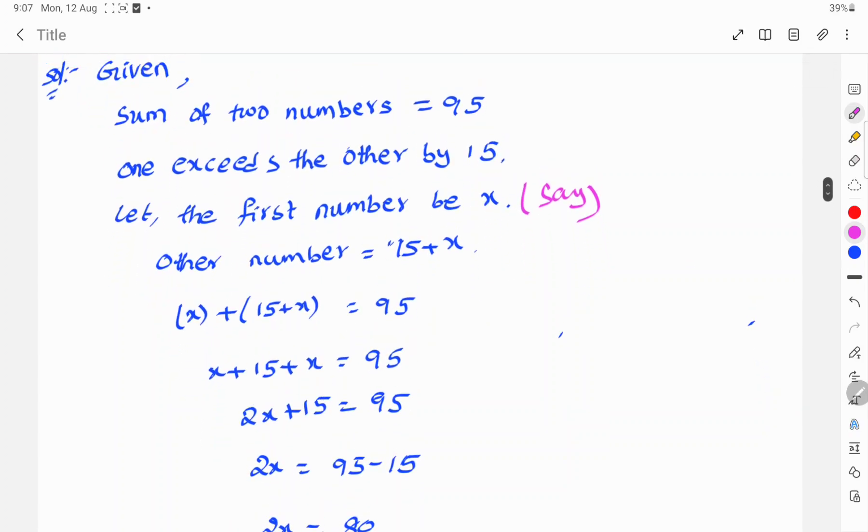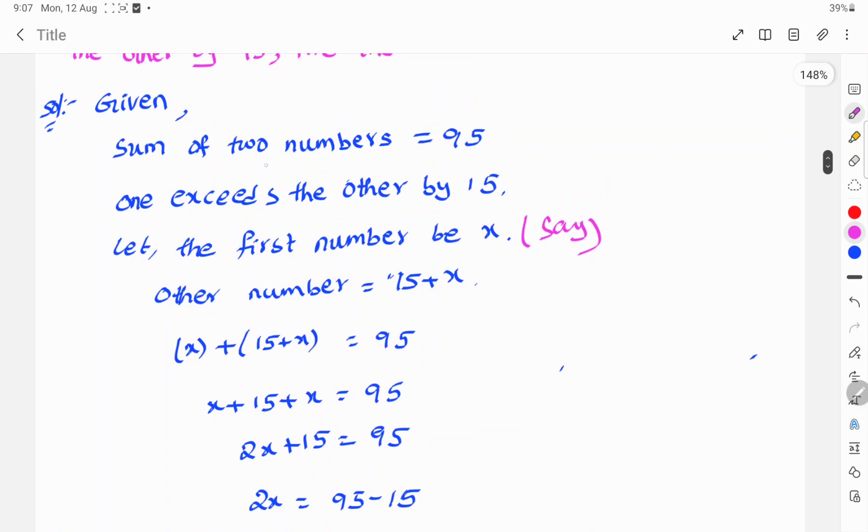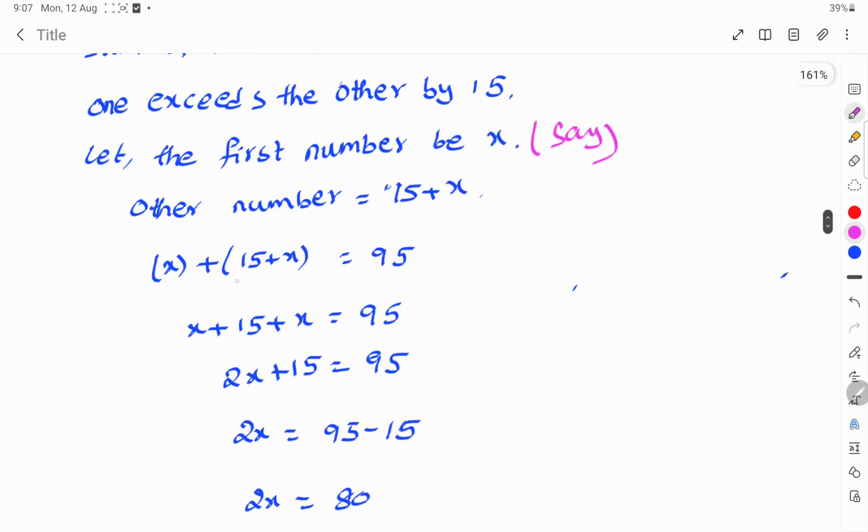Given that the sum of two numbers is 95, these two numbers x and x plus 15 sum to 95. So, x plus 15 plus x is equal to 95.